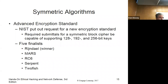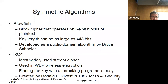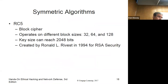AES is the current winner. NIST put out a request for a new standard that had to be a symmetric block cipher capable of supporting 128, 192, and 256-bit keys. The candidates were Rijndael, Mars, RC6, Serpent, and Twofish. Rijndael is the cipher that won and became AES. There's also IDEA — another block cipher, 64-bit with a 128-bit key, free for non-commercial use. Blowfish is another one — 64-bit but with a key length up to 448 bits, developed for public use. We also have RC4 and RC5.